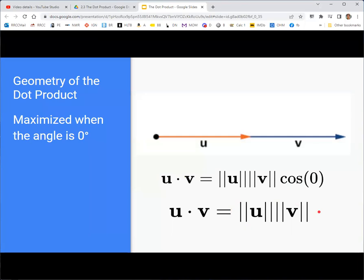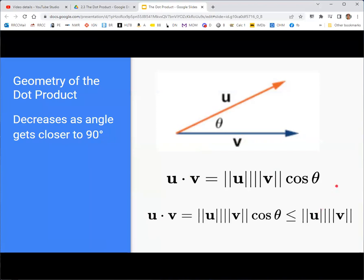And then as they go to being at right angles, it just slowly decreases. And then, of course, if they are at right angles, then the dot product should be 0.